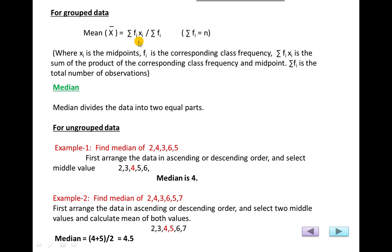For grouped data, the formula for mean is the sum of the product of frequency and midpoint divided by the sum of frequencies, which equals n. Here xi is the midpoint (the representative value of each class), fi is the corresponding class frequency, and summation fi·xi is the sum of all frequency-midpoint products.